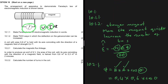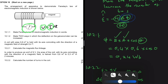What most people get wrong here: they don't realize the formula uses the change in magnetic flux linkage. They just take the value calculated in 10.2.1 and substitute it directly — that is totally wrong. You must find the initial and final magnetic flux linkage, subtract the two values to find the change, and then substitute into the equation.